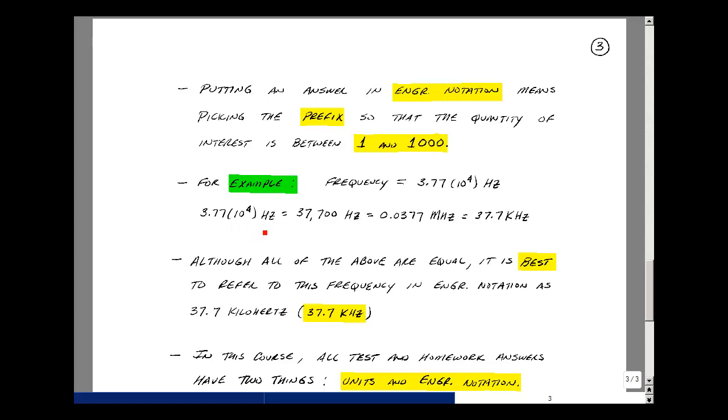So that's that quantity. You could also write that as 37,700 hertz, 0.0377 megahertz, or 37.7 kilohertz. All of the above are the same number, but it'll be best if we can put the frequency in engineering notation. And that would be this last one, 37.7 kilohertz. The number is between one and a thousand.